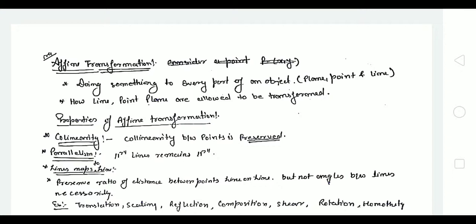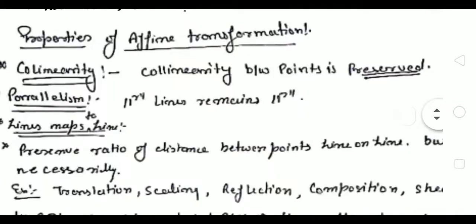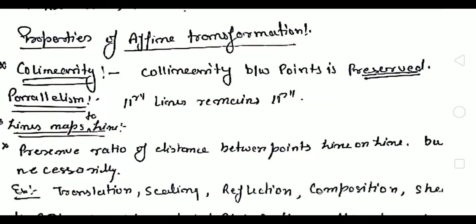Whenever you have to use affine transformation, first of all you have to check whether these properties are on that object or not. If these properties are there, then only you can do affine transformation. So what are the properties? The first is collinearity.